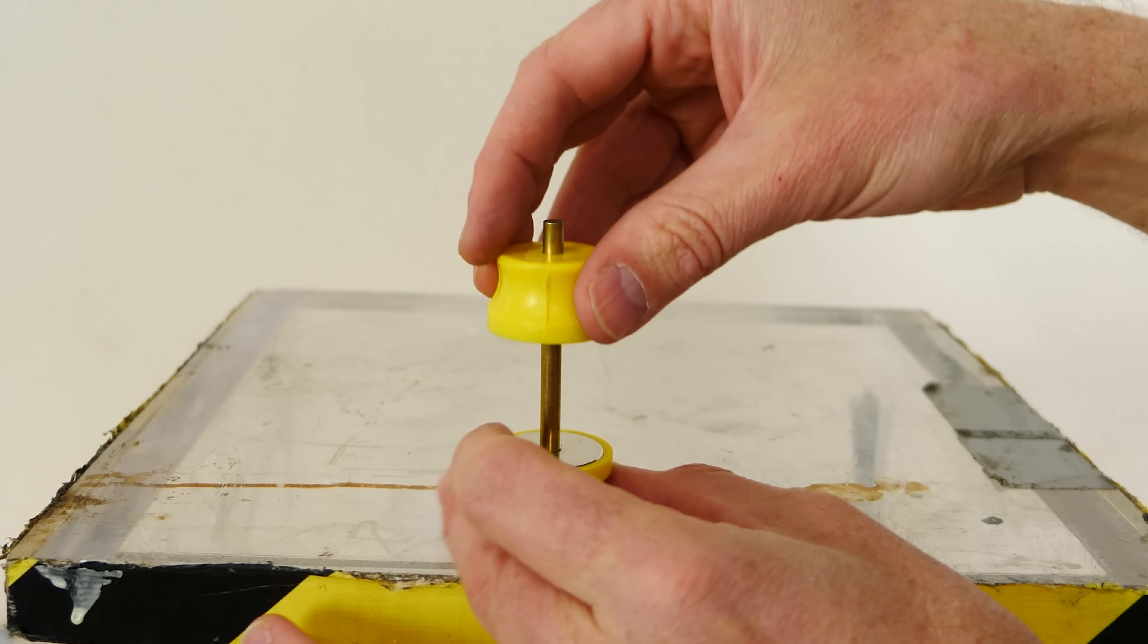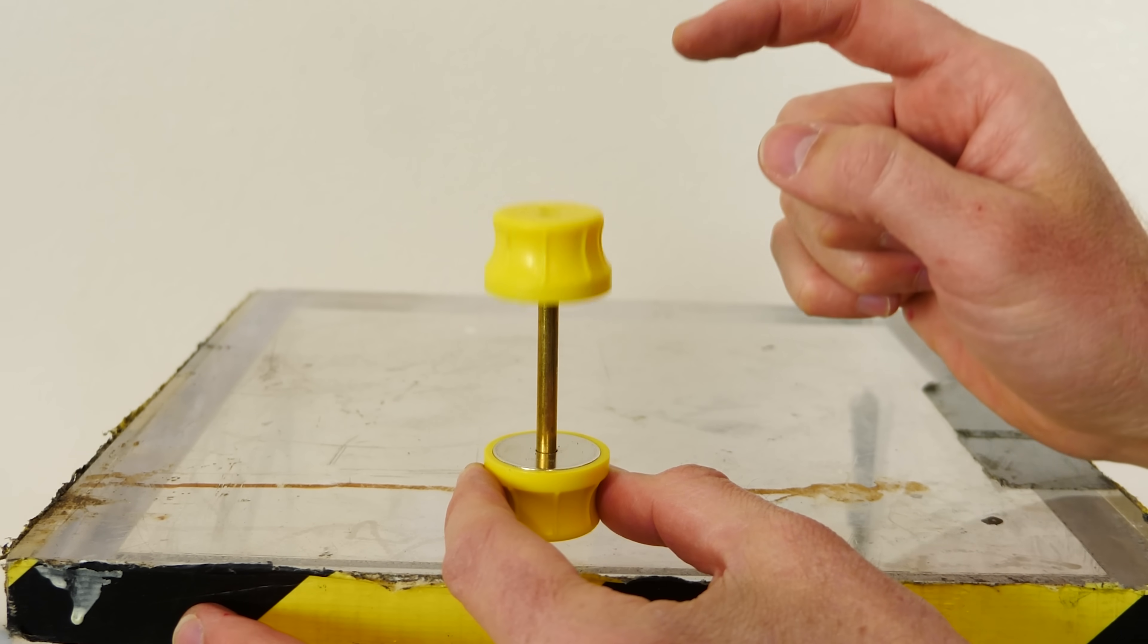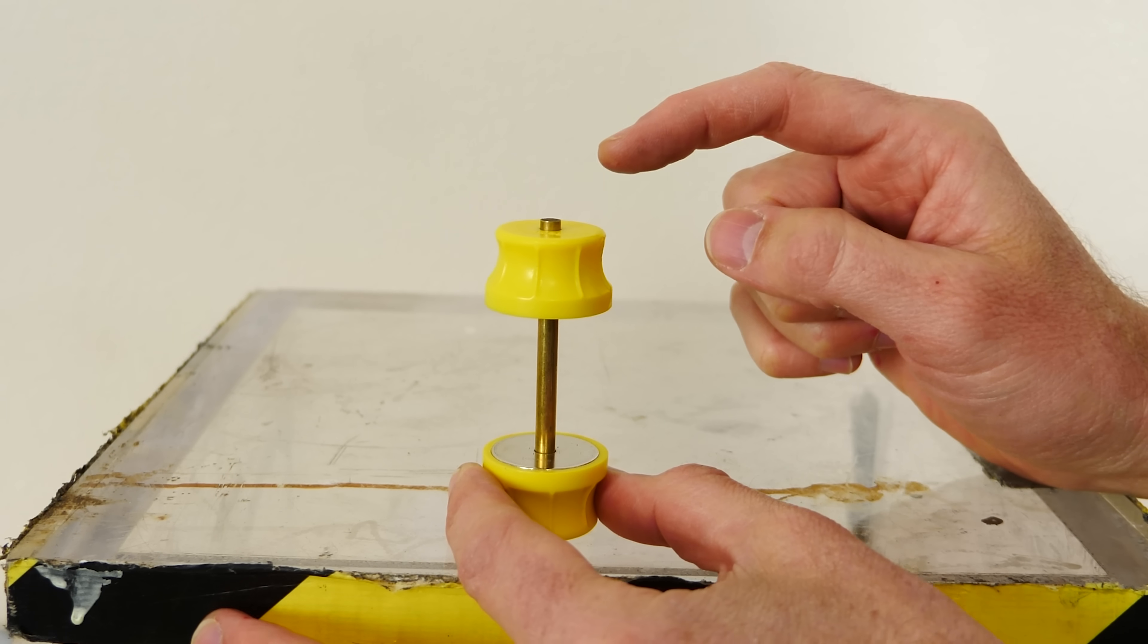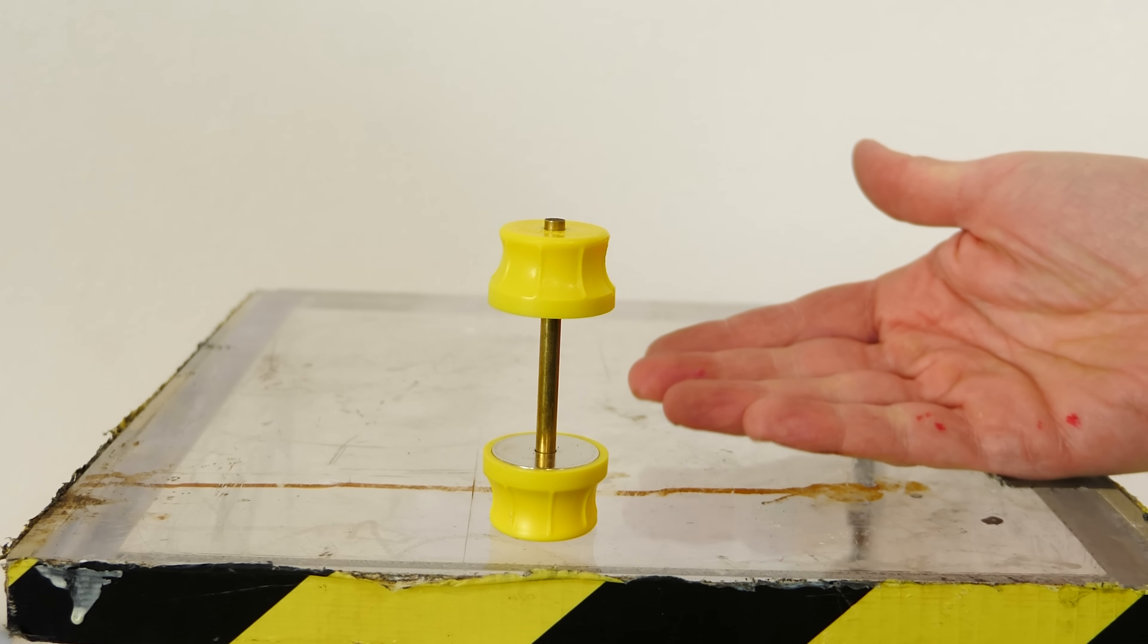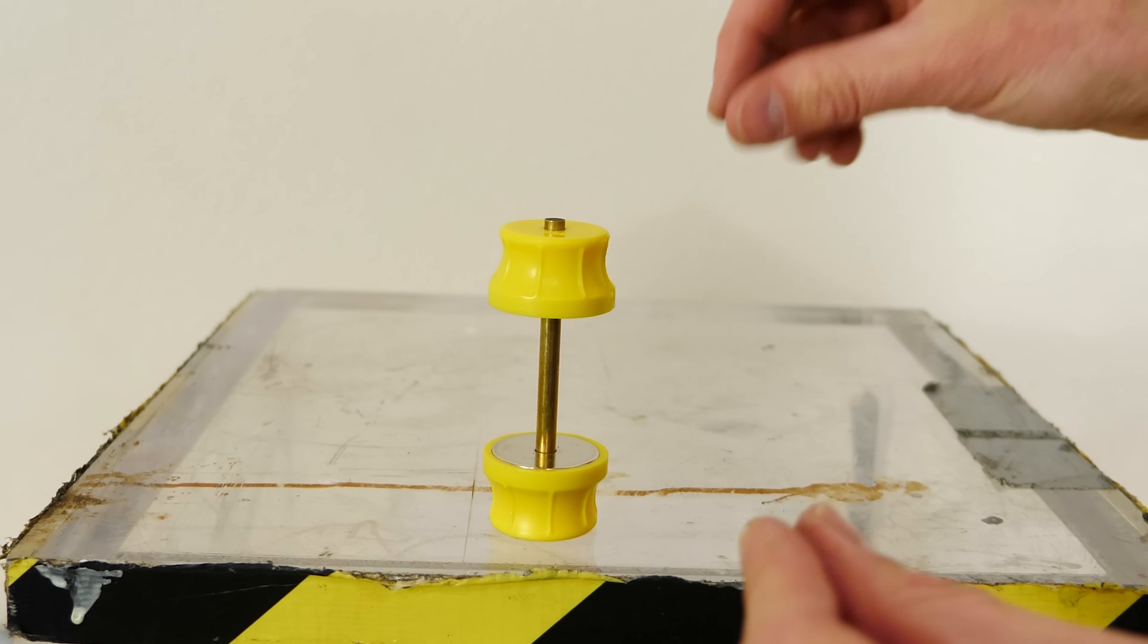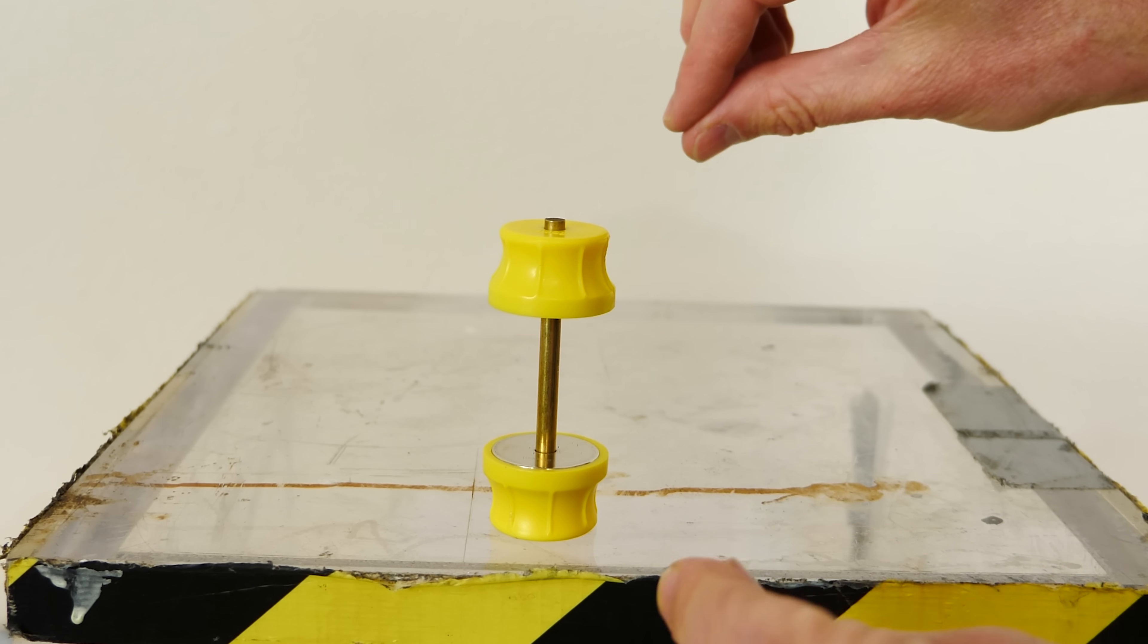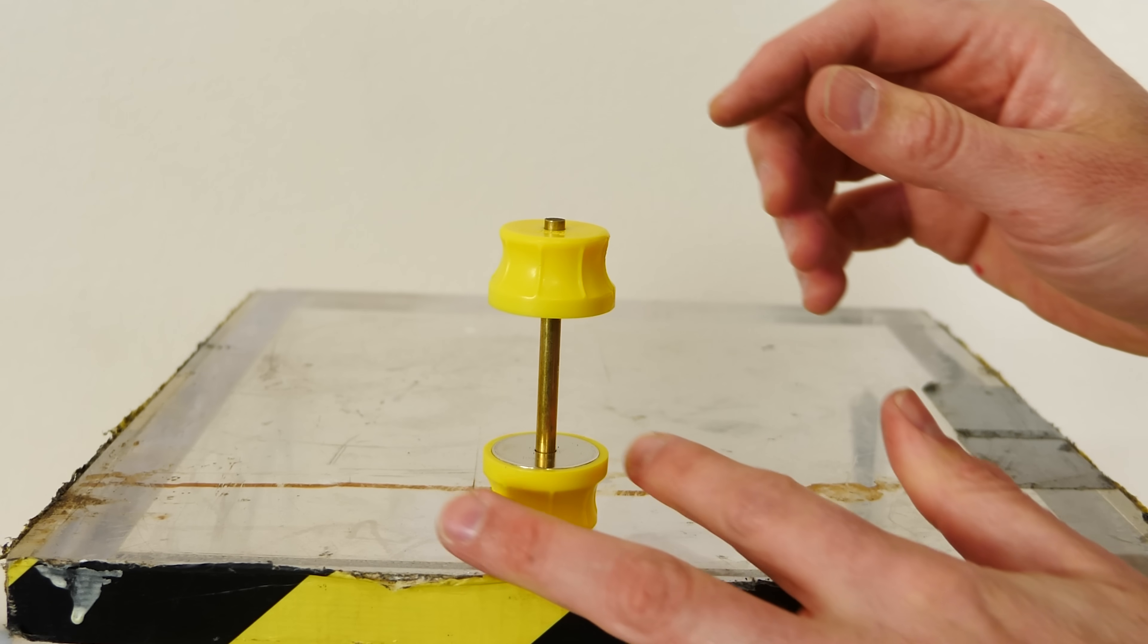So first let me show you these two magnets. You can see these two magnets obviously repel each other. Now this might not be very interesting to you if you've ever seen two magnets together with the same poles facing each other. They repel each other obviously.